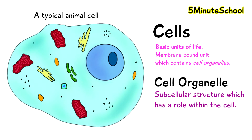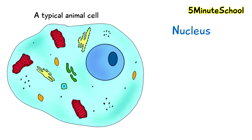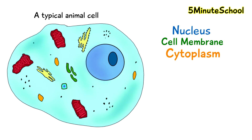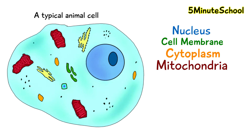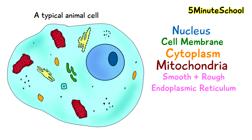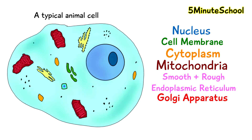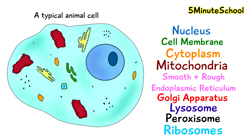The organelles we're going to talk about today are the nucleus, the cell membrane, the cytoplasm, mitochondria, smooth and rough endoplasmic reticulum, the Golgi apparatus, lysosomes, peroxisomes, and ribosomes.